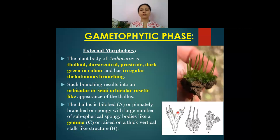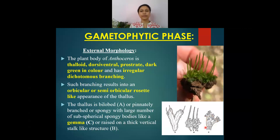Anthoceros also shows irregular dichotomous branching, and because of this irregular dichotomous branching the typical rosette-like form of thallus appears orbicular or semi-orbicular in shape. This irregular dichotomous branching ultimately results in three different forms of thallus: the first is bilobed. In some species the thallus may also develop on a thick vertical stalk-like structure, and in some species spherical spongy bodies called gemmae are developed within gemma cups on the external surface.